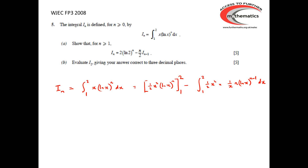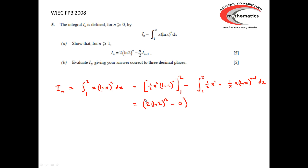Differentiating ln(x) to the n just requires the chain rule. Looking at the right-hand side, putting x equals 2 in, we've got half of 4 is 2, times ln(2) to the n. And when we put x equals 1 in, we've got ln(1) which is 0, so the whole expression is going to be 0. So we've got 2 times ln(2) to the n, take away 0.